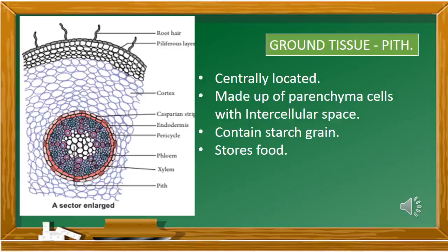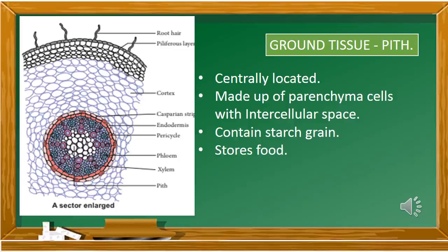The next ground tissue is the pith, located at the center of the root. In the last class we learnt about dicot root — in a mature dicot root, pith is absent. In monocot root, pith is present and centrally located. It is made up of parenchyma cells, and its function is to store food — it contains starch grains.